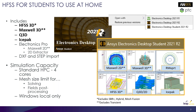ANSYS Electronic Desktop is now available as a student version for students to use at home. It offers many different electronic tools such as Maxwell, HFSS, Q3D, and ISPAC. It comes with some limitations — you can't use the SBR+ solver, hybrid mesh region, or mesh fusion. In Maxwell, transient simulations are not possible in the student version, but you can use it on your local Windows machine.